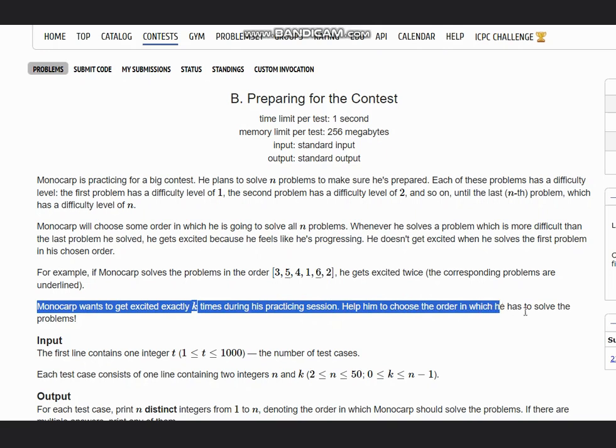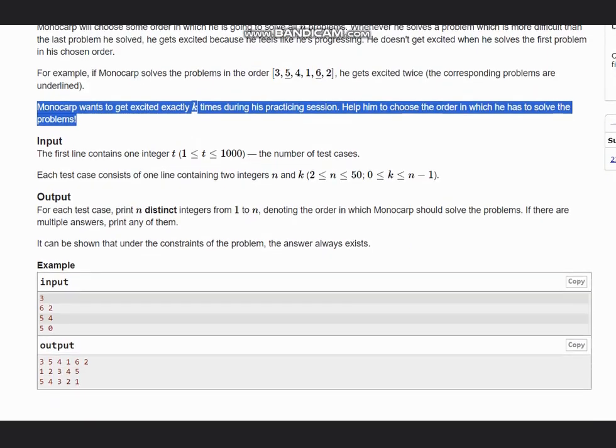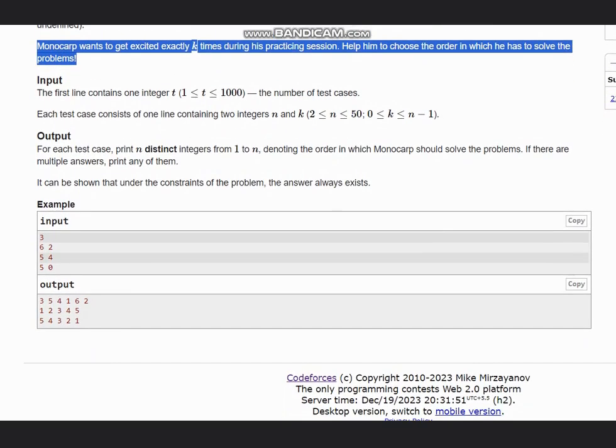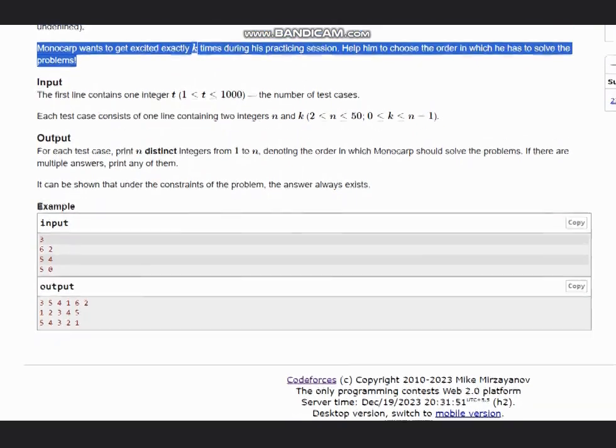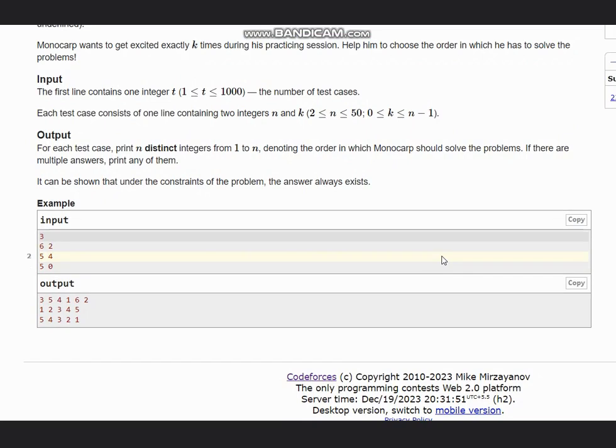Help him choose the order in which he has to solve the problems. Here we are given the input t and two integers n and k. What we want to do is print the order in such a way that the problems are solved and there are exactly k exciting moments.